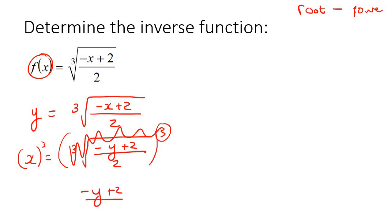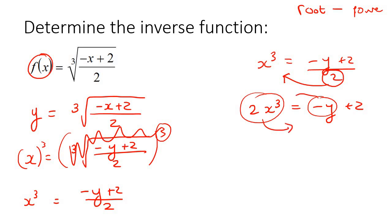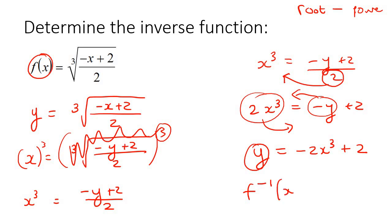On the next step you're left with negative y plus 2 over 2 — everything except the root — and on the other side you're left with x cubed. You now need to get this y by itself. I would multiply this side by 2, then take this y over to the other side and take this to the other side. You end up with a positive y on the left and negative 2x cubed on the right. Then rewrite this as f, but because it's the inverse, write it with negative 1.